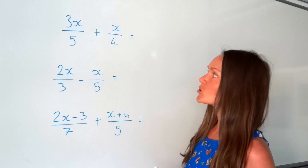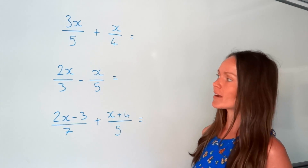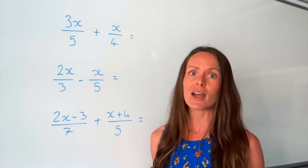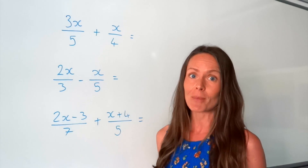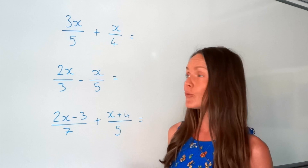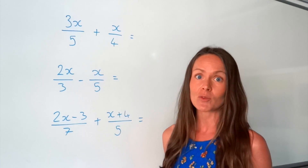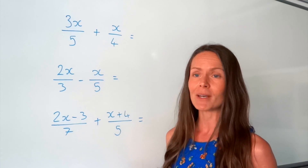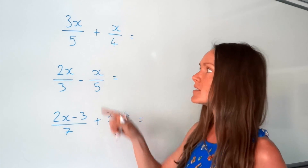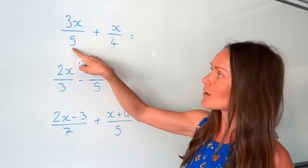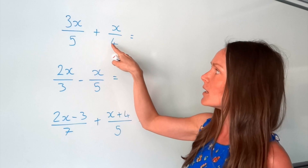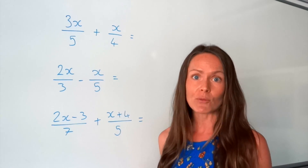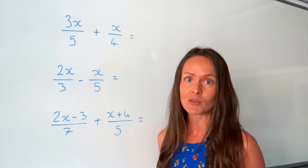Just like when you're adding and subtracting normal fractions, you need to find a common denominator before you can add or subtract them. A common denominator just means you have to have the same number underneath both fractions before you can add or subtract.